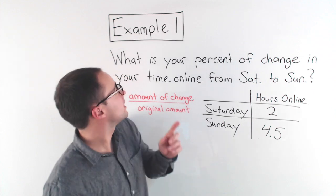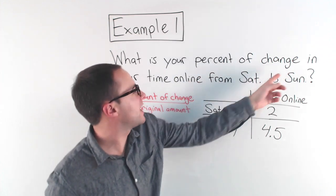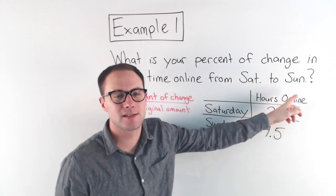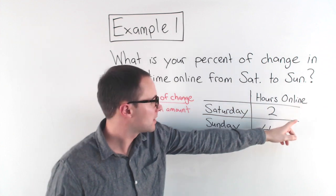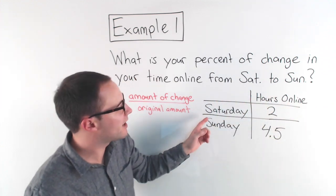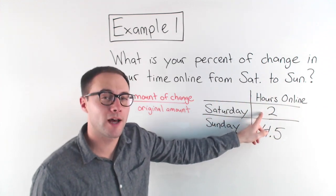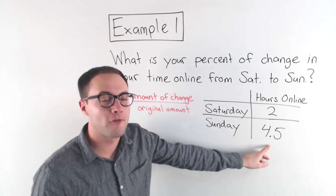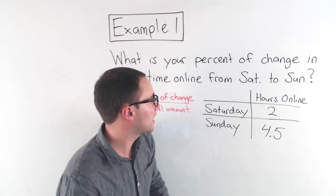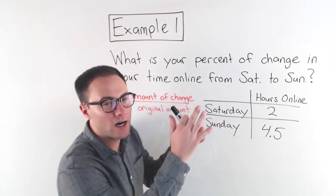Example one: What is the percent of change in your time online from Saturday to Sunday? Here's a table. On Saturday we spent two hours online. On Sunday, four and a half hours. What is the percent of change?